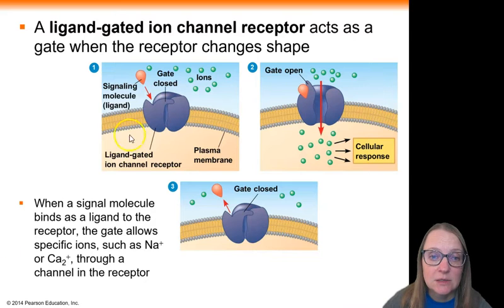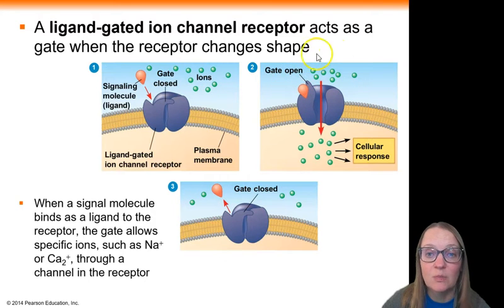So, in this case, we've got our ligand-gated ion channel receptor. Currently, in this example, the gate is closed, so no ions are passing through the channel. Along comes a signaling molecule, or our ligand. Once a ligand binds to the receptor, that is going to open up the gate. And when the gate opens, you get an influx of these ions across the membrane.